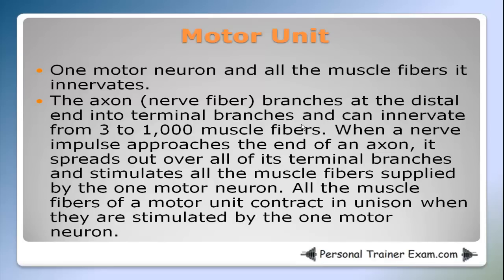The axon, or nerve fiber, branches at the distal end into terminal branches and can innervate from three to one thousand muscle fibers. When a nerve impulse approaches the end of an axon, it spreads out all over its terminal branches and stimulates all the muscle fibers supplied by the one motor neuron. All the muscle fibers of a motor unit contract in unison when they are stimulated by the one motor neuron.